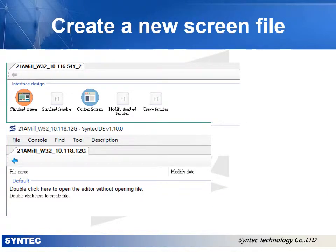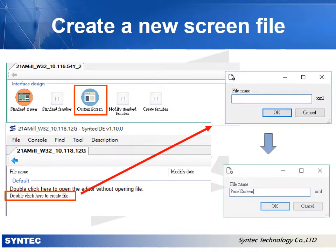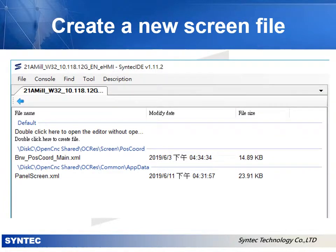Back to Syntec IDE. Double click the custom screen icon, then double click here to create the file — a dialog box will pop up. Key in the file name as 'panel screen' and press OK. The file list will show the new file we just created, named 'panel screen'.